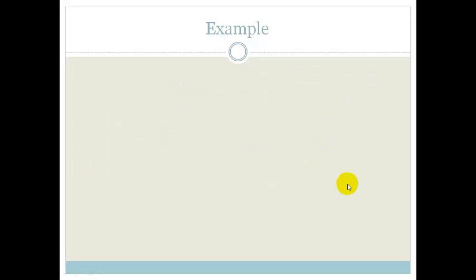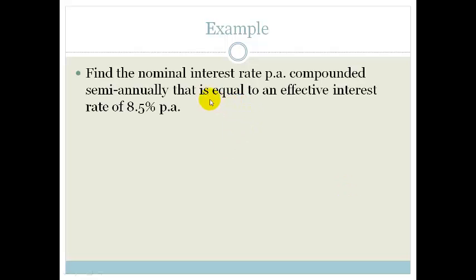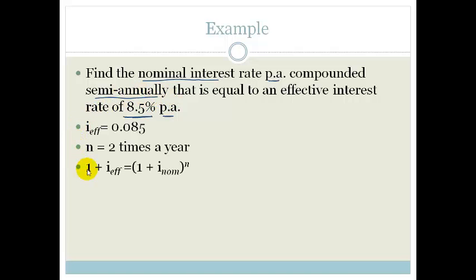Let's look at another example. It says find the nominal interest rate per annum compounded semi-annually that is equal to the effective interest rate of 8.5% per annum. So the effective interest rate is 0.085. The number of times is twice a year for semi-annually. And our equation is 1 plus i effective is equal to 1 plus i nominal over n. And this time we want this guy here.